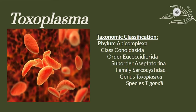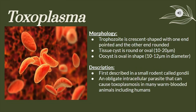Last but not the least, the genus Toxoplasma is classified under the family Sarcocystidae. Trophocytes under this genus are crescent-shaped, with one end pointed and the other end rounded. The tissue cyst is round or oval, while the oocyst is oval in shape. Toxoplasma was first described in a small rodent called gundi, and these intracellular parasites are known to cause toxoplasmosis in many warm-blooded animals, including humans.